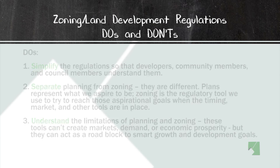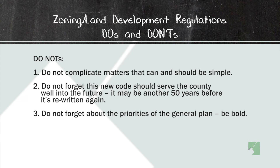Zoning tools can act as a roadblock to good, smart development. Our do-nots: we don't want to complicate matters that can and should be simple. We don't want to forget that this new code should serve the county well into the future — it may be another 50 years before it's rewritten again. And we don't want to forget about the priorities of the general plan. We want to be bold, but make sure the priorities of the general plan shine through in our new code.